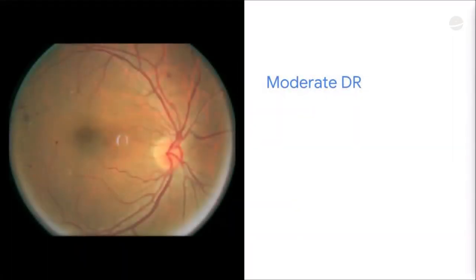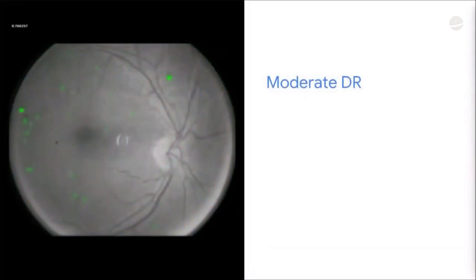Here's a picture of moderate disease, which is a little worse because you can see some bleeding at the ends. The heat map shows it picks up the bleeding. But there are two artifacts in this image: a dust spot — a little dark spot — and a small reflection in the middle of the image. You can tell that the model essentially ignores them.